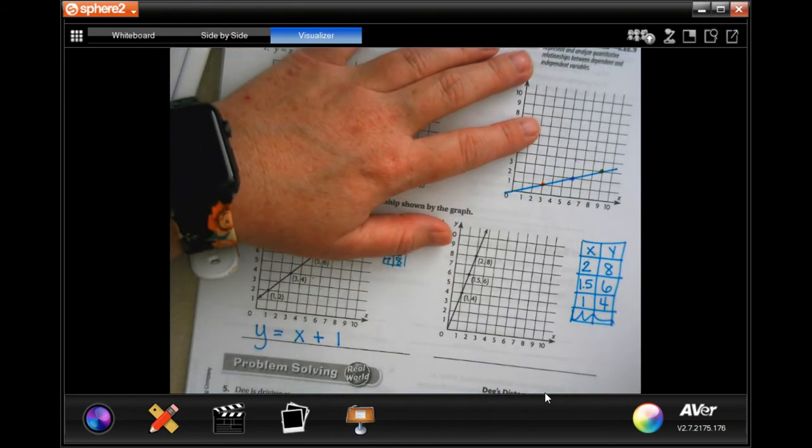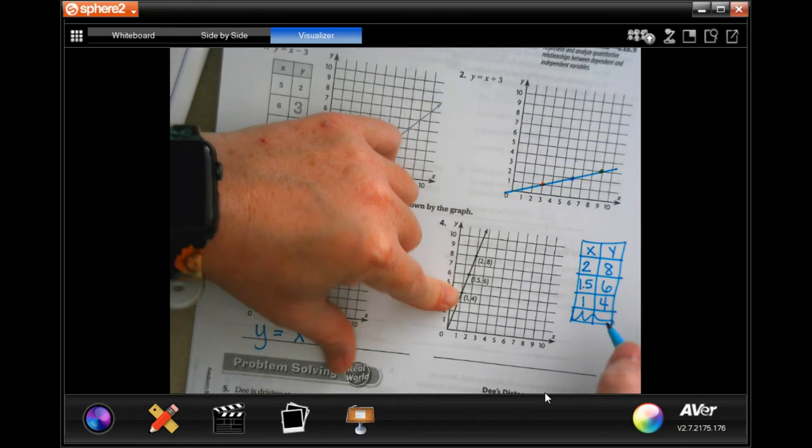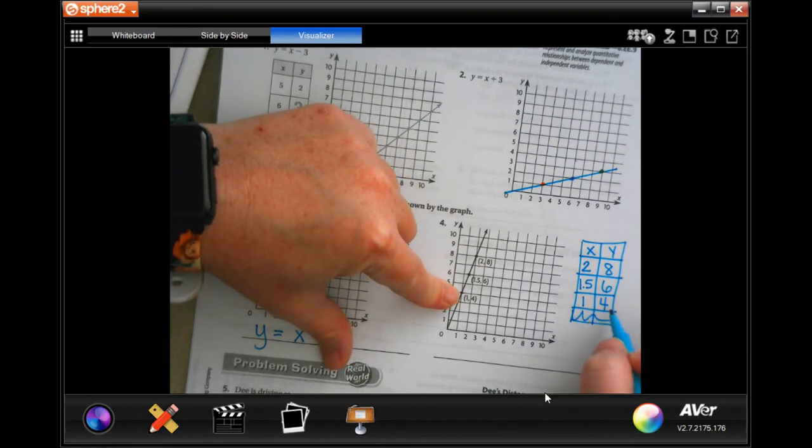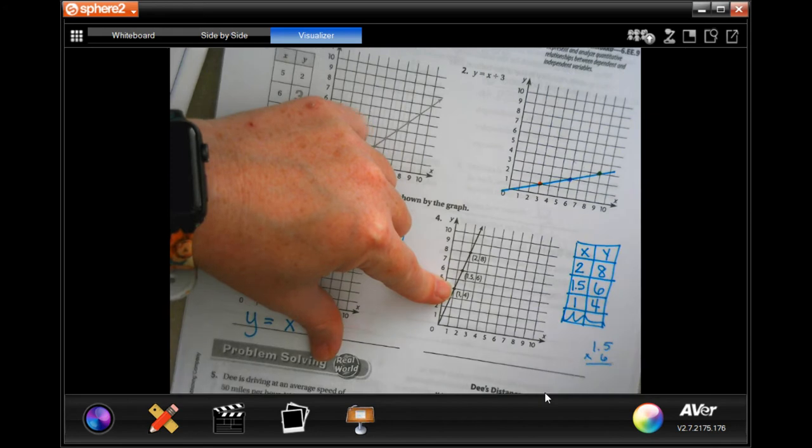To get from one to four we have to multiply it by four. If we multiply 1.5 by four, do we get six? We know that if we multiply two by four we get eight. So I'm going to go right here and I'm going to go 1.5 times six, I'm going to see what we get.